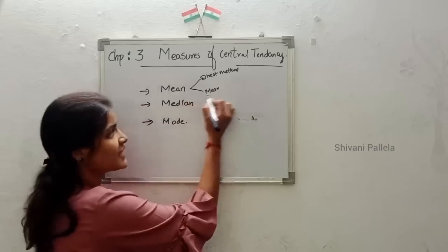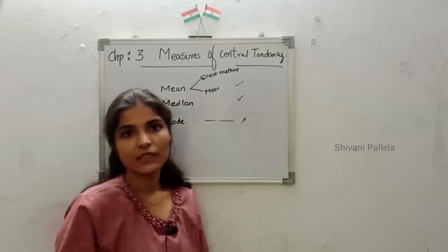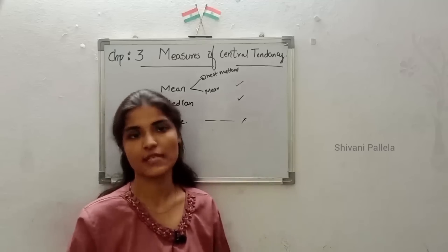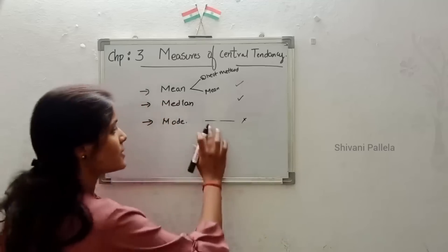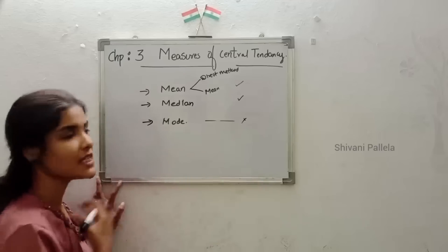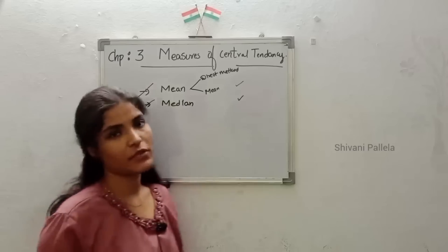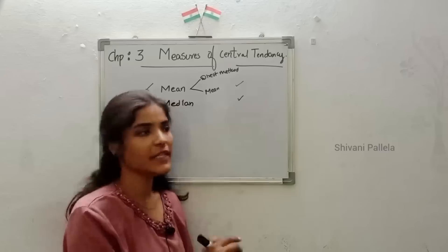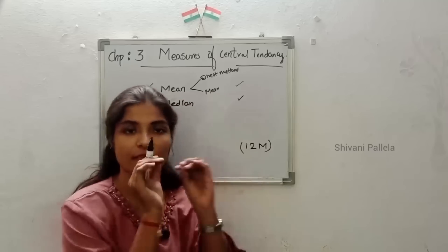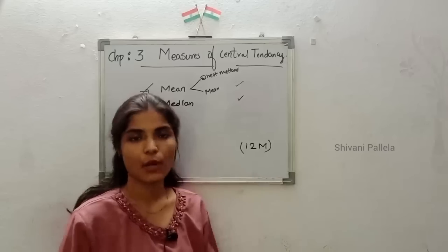My suggestion is: mean is easy, median is easy, mode is a little bit difficult to understand in this less period of time — your examinations will be in hardly 5 to 6 days, today is 14th December. So keep mode as a choice and be perfect with mean and median. In this video I will explain mean as well as median, where one question will definitely be asked for 12 marks in Part B.